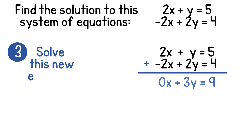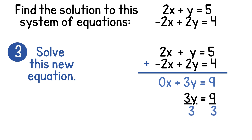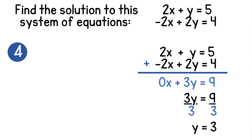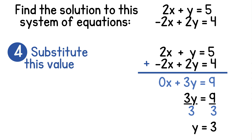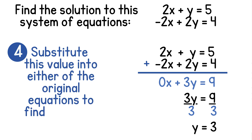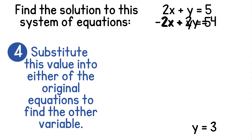Now we can solve this new equation. Simplifying gives us 3y is equal to 9. We'll divide both sides by 3 to get y by itself. This gives us y equals 3. Now that we have one solution, we can find the other by substituting this value into either one of our original equations in the system. It doesn't matter which equation we choose, but we'll just do the top one again.